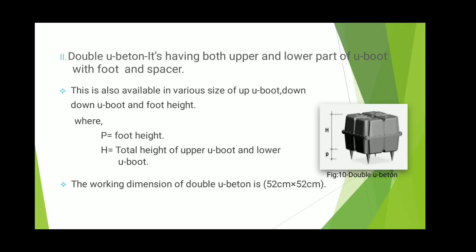The double U-Boot has both upper and lower U-Boot with foot and spacer, and generally consists of various sizes of U-Boot, spacer, and foot size. According to the required slab height or thickness, or as per construction requirements, we can adjust the height of the foot as well as the height of the upper boot. Generally for construction we use 52 by 52 centimeter U-Boot.